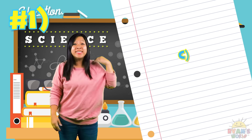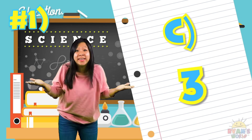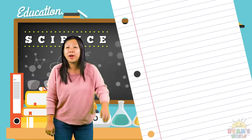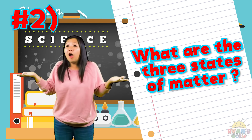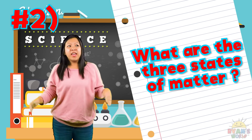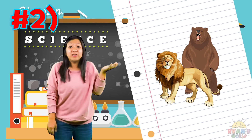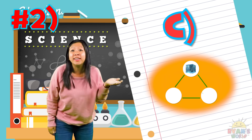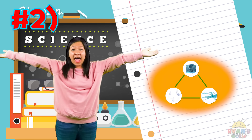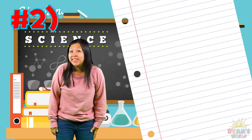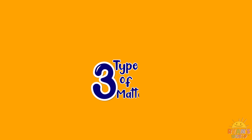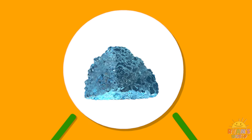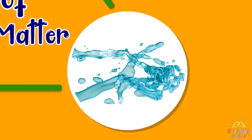That's right, the answer is C — there are three states of matter. Question number two: what are the three states of matter? Is it A, lions, bears, and tigers? Or is it B, sun, moon, and stars? Or is it C, solid, liquid, and gas? That's right, it is C. The three states of matter are solid, liquid, and gas.